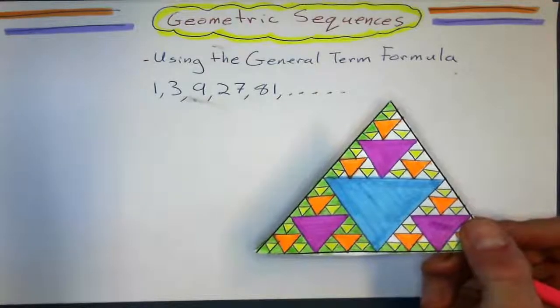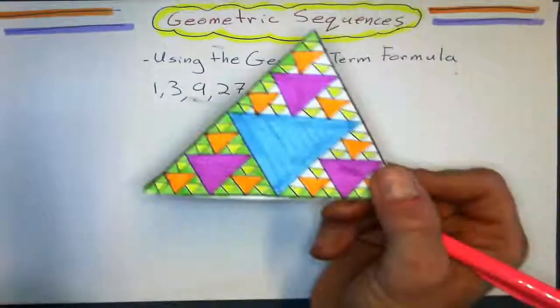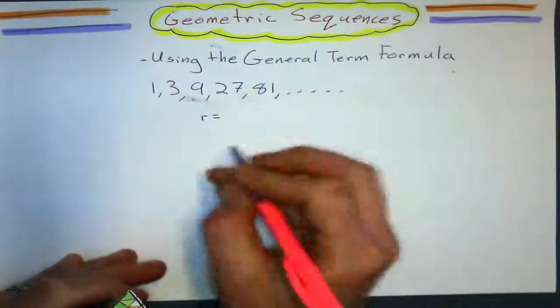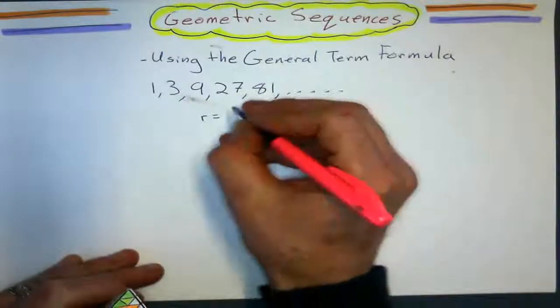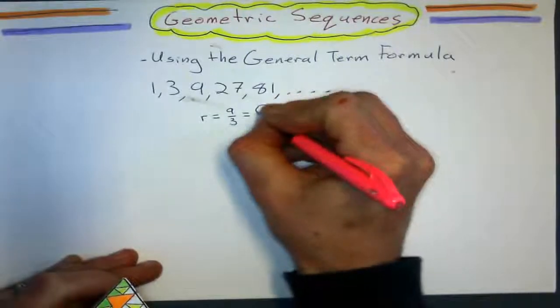So with that geometric sequence, 1, 3, 9, 27, 81, I don't have that many triangles on there. But we know if we wanted to find the common ratio, I'm just going to divide two consecutive terms, 9 divided by 3 or 3 divided by 1, and it'll give me 3.